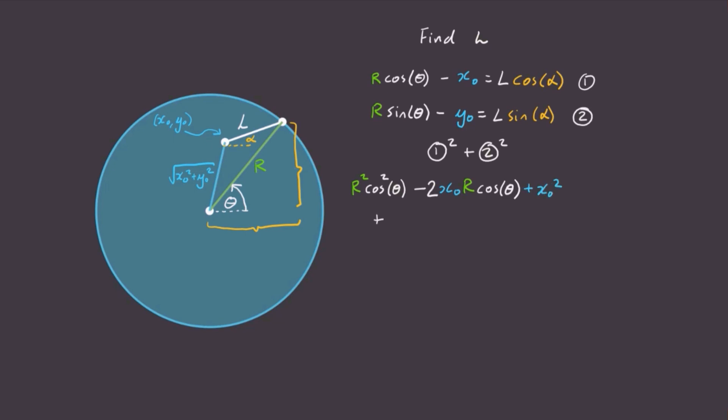Squaring and expanding the left-hand side equals this. And squaring and summing the right-hand side equals this. Now cosine squared plus sine squared is equal to one. So we can cancel these terms out nice and easy.